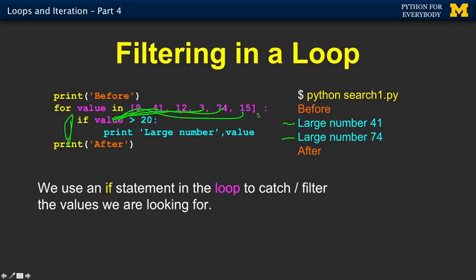The for loop knows we're done — go on to the next line. So this is a filtering pattern where we do some if statement and conditionally run some code based on the value we're looking at. That's like searching for large numbers in our long list of numbers.